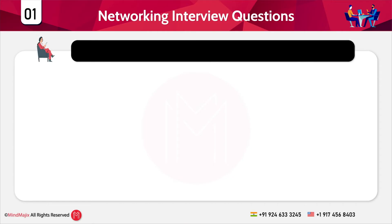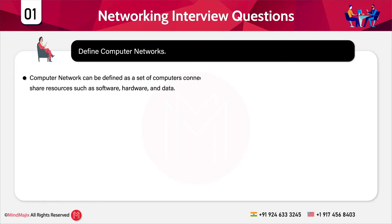The first question is a very basic one: define computer networks. A computer network can be defined as a set of computers connected with each other so as to communicate and share resources. Those resources can be software, hardware, and any kind of data.